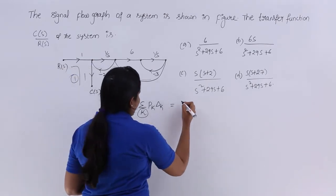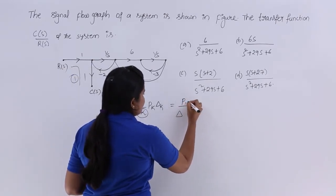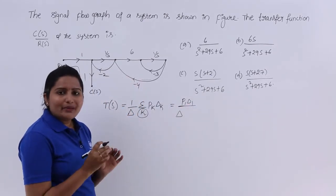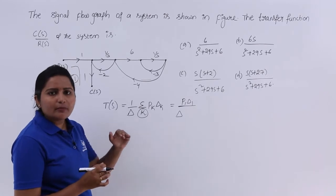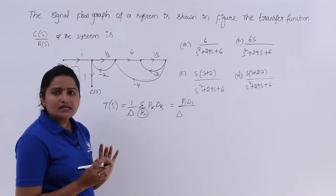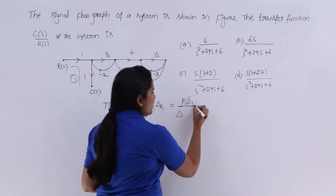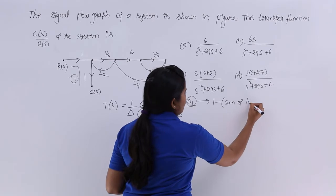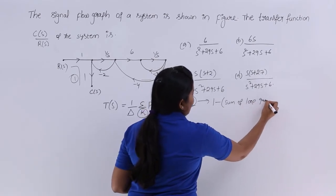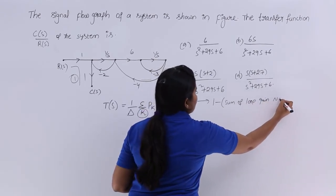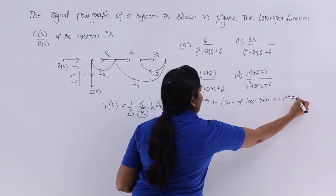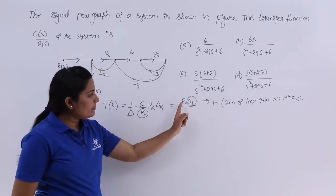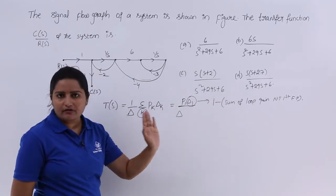Since K equals the number of forward paths and we have only one forward path, I am going to modify the formula to P1*delta1 divided by delta. P1 is the forward path gain, and delta1 is equal to 1 minus the sum of loop gains which are not touching the first forward path.